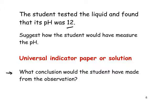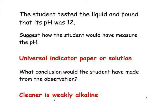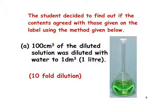What conclusion would the student have made from the observation? The cleaner is alkaline — I said weakly alkaline, but I think if the pH came out to be 12, I would describe that as certainly moderately, if not strongly alkaline. Strongly alkaline would be in the range 12 to 14, so I'm not terribly happy referring to it as weakly alkaline.